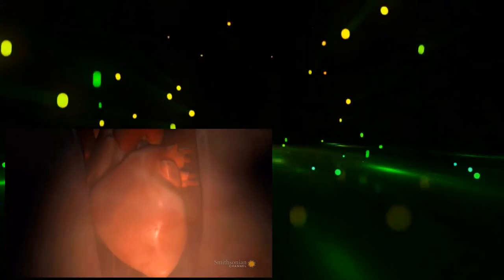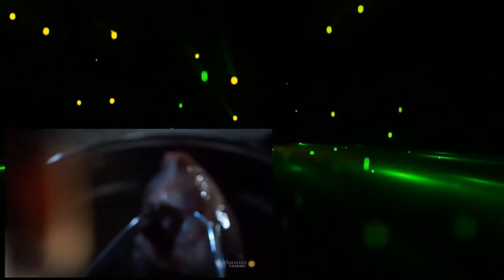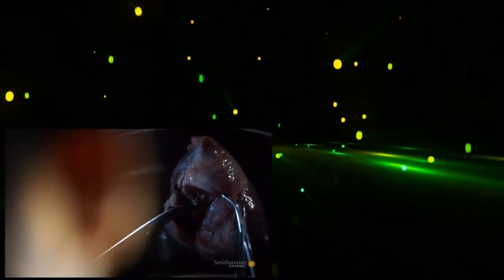The average human heart beats 100,000 times a day. In an average 70-year lifetime, that's a massive 2.5 billion times. But what happens when a heart doesn't beat like it's supposed to?